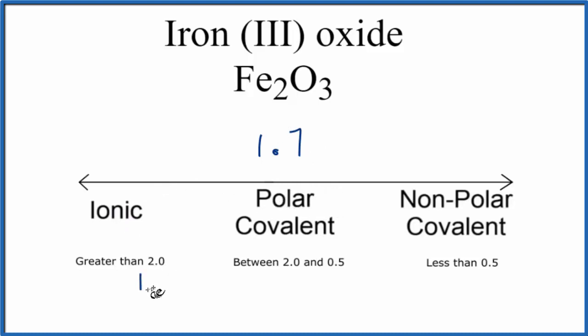Some textbooks say that 1.7 and above is ionic. So in that case if your textbook were to say that it would be an ionic compound.